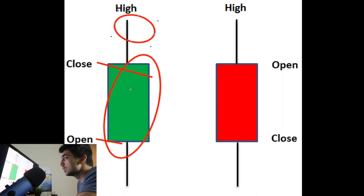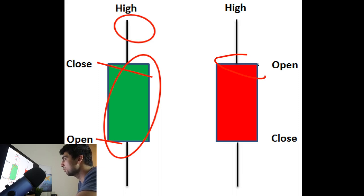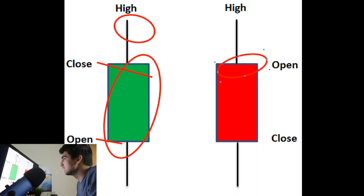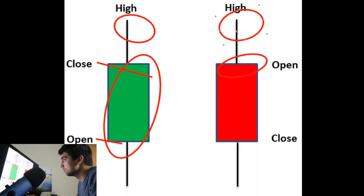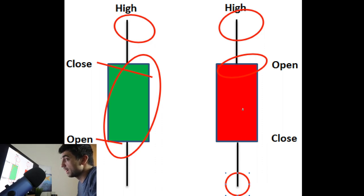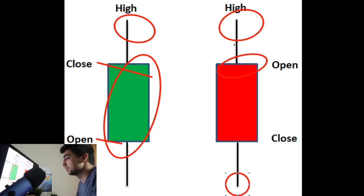With a bullish green candlestick, the high is the top of the wick, the low is the bottom of the wick, the open is the bottom of the body, and the close is the top of the body. With a bearish red candle it's the opposite — the open is the top of the body, meaning the stock opened that high and closed lower. The high wick means sellers hit a resistance level, and the low wick means buyers came in and pushed it back up. Those are the main things to know when looking at a single candlestick.